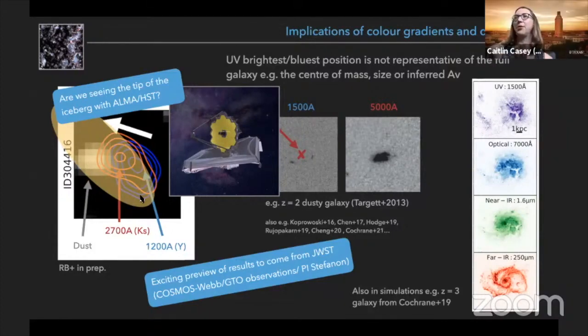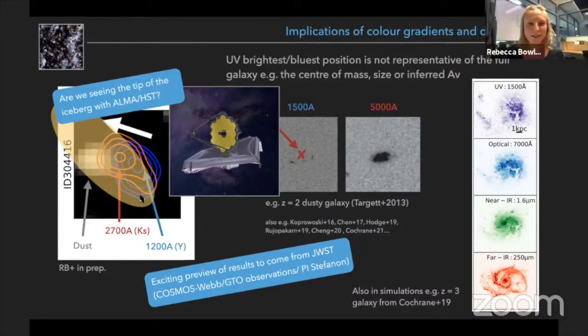So there are a couple of other great questions too. Do these bright LBGs at redshift 7 have Spitzer detections? Yeah that's a great question, yes so they do.